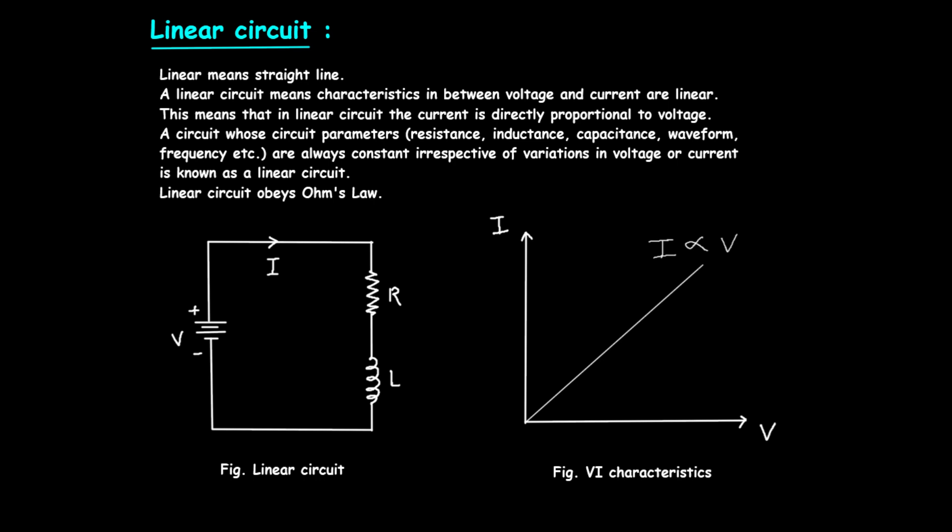2. Inductor, L: An inductor opposes changes in current and stores energy in a magnetic field when current flows through it. In a direct current, DC, circuit, after the initial change, inductors behave like resistors with a constant value. 3. Voltage Source, V: The voltage source provides the potential difference that drives the current through the circuit. In a linear circuit, the current produced by the voltage source is directly proportional to the voltage applied, assuming constant resistance.